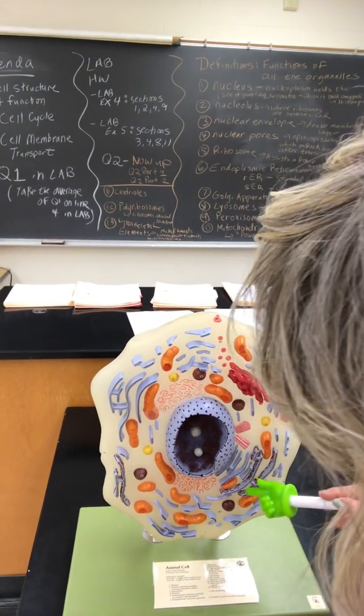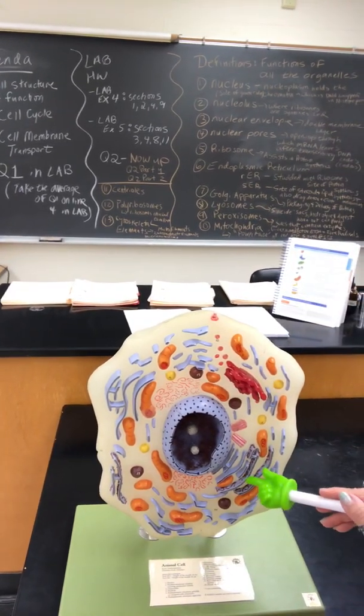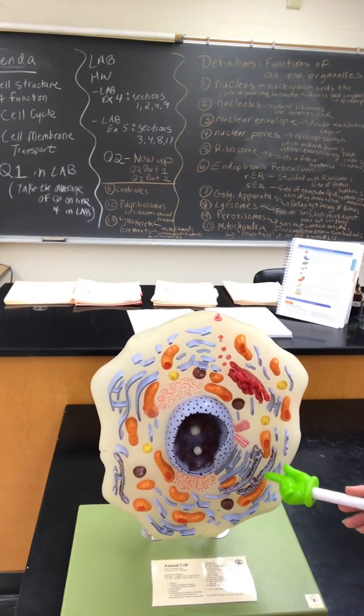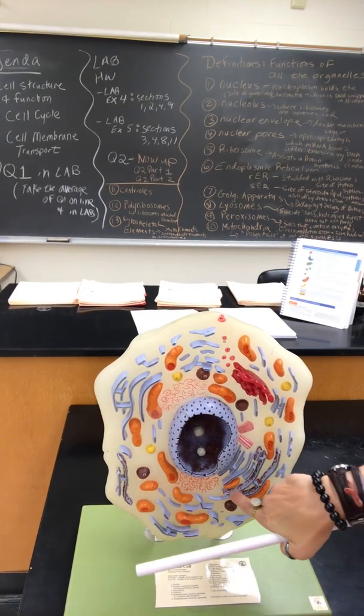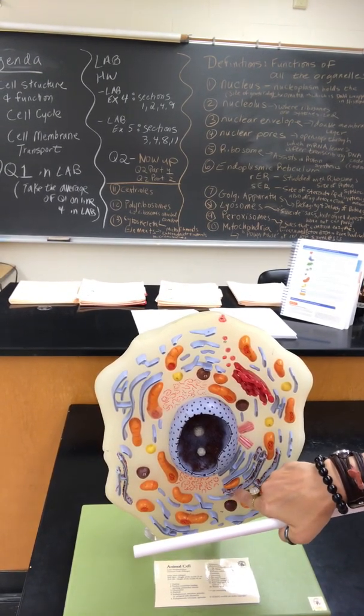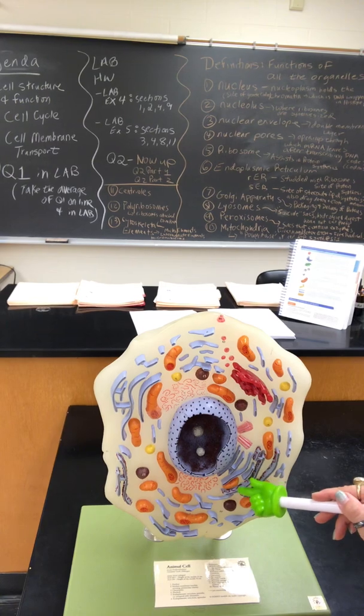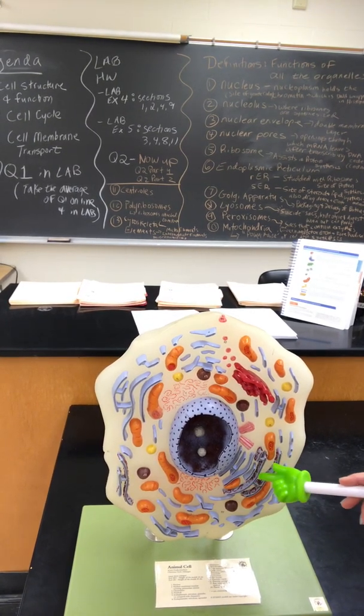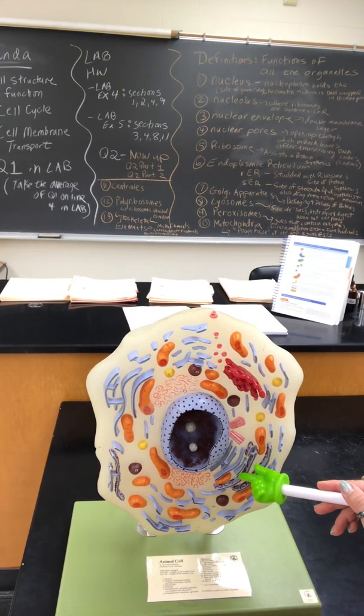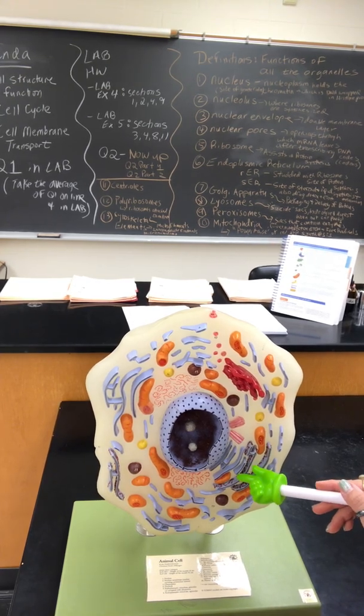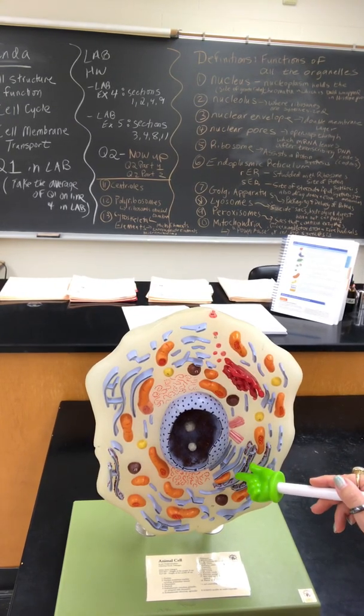I want you to be able to identify the ribosomes that are attached to a transport system here. The transport system is called the endoplasmic reticulum. The endoplasmic reticulum with the ribosomes attached, which you can see right here, all the little tiny ribosomes, they look like little tiny balls. These ribosomes are going to assist in protein synthesis at the endoplasmic reticulum. It's studded with ribosomes and it's the site of protein synthesis.